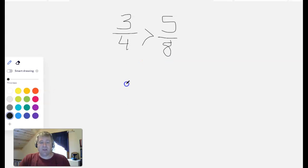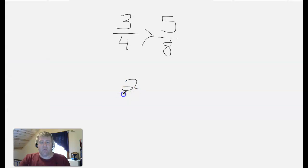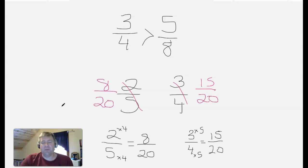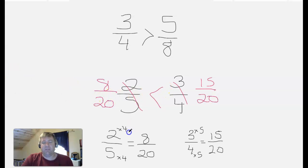Try one on your own — try comparing two-fifths to three-fourths. If you paused your video, welcome back. I looked at this and said I can make an equivalent fraction to two-fifths with a denominator of 20, and I can do the same with three-fourths. So now comparing common denominators: eight-twentieths versus fifteen-twentieths. Two-fifths is less than three-fourths because eight-twentieths is less than fifteen-twentieths. I hope this has helped you compare fractions using equivalent fractions. Have a great day, we'll see you next week.